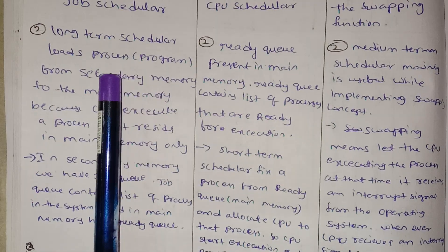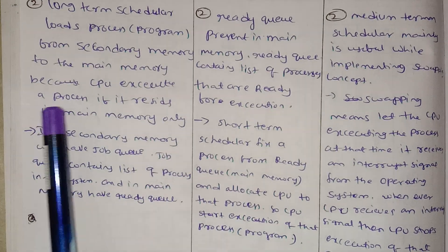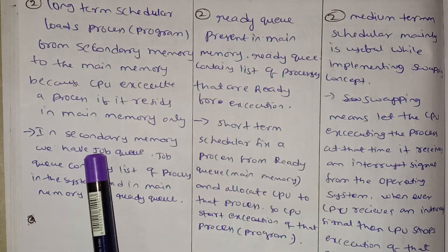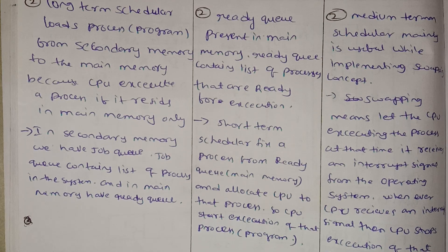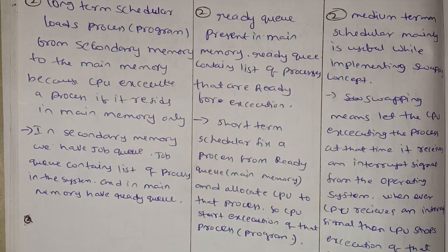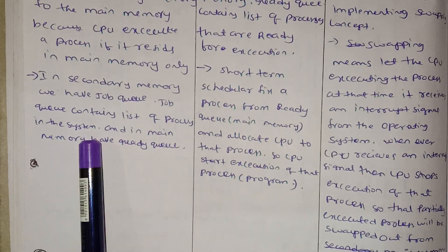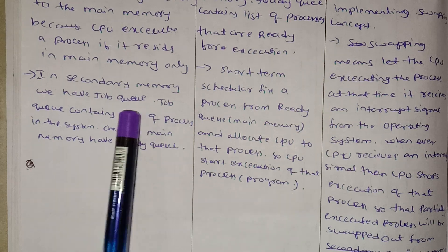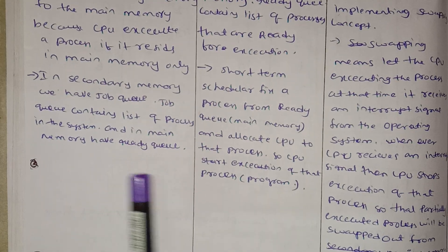Long Term Schedulers move processes from Secondary Memory to Main Memory, because the CPU executes a process only if it resides in Main Memory. Long Term Schedulers decide which process or program will be loaded from Secondary Memory to Main Memory. In Secondary Memory we have a job queue, which contains a list of processes in the system. In Main Memory we have a ready queue.